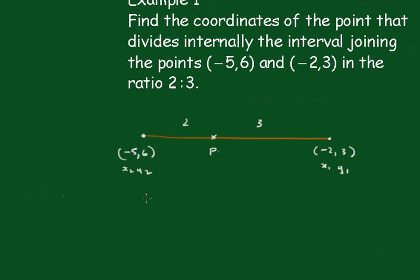Now, x will be equal to (mx2 + nx1)/(m + n). And that's equal to this one, 2 times the furthest one away.